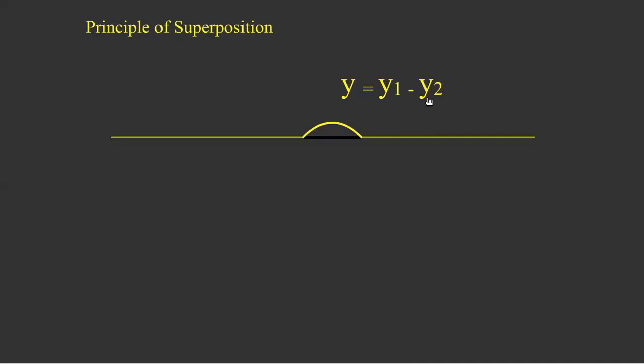From the principle of superposition, we get Y equals Y1 plus or minus Y2. If constructive, it is plus; if it is destructive, it will be Y minus Y2.